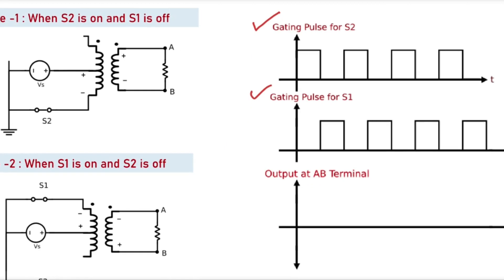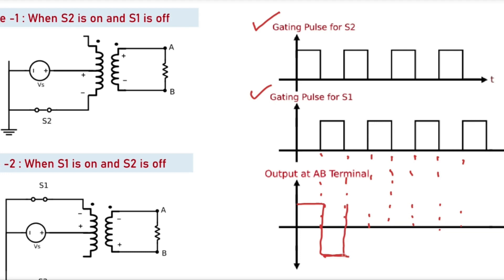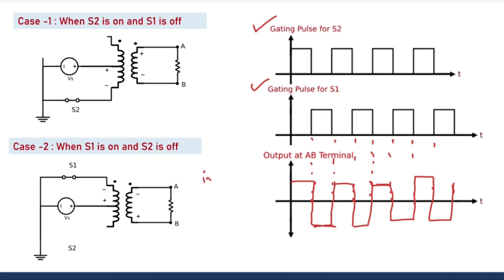From this graph, we can see the gating pulses of S1 and S2 in separate graphs. These two pulses will be given to the MOSFETs at S1 and S2. When S2 is conducting, the output voltage is of positive polarity, and when S1 is conducting, the output voltage is of negative polarity. By plotting the output curve, we can see that by using the switches properly we get an alternating output voltage — our mission of getting an alternating voltage from a DC source is accomplished.